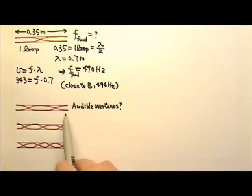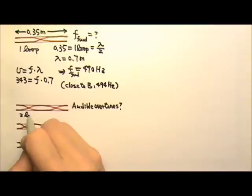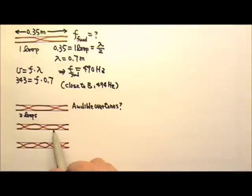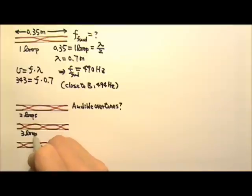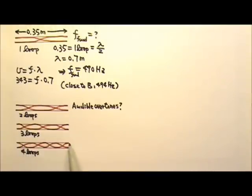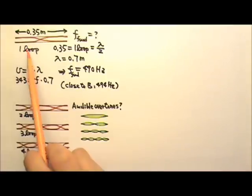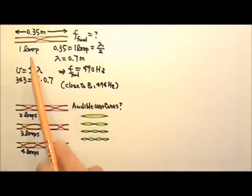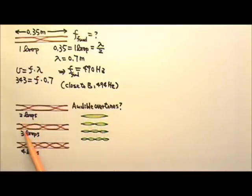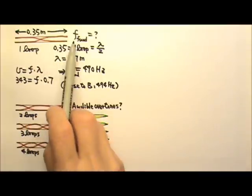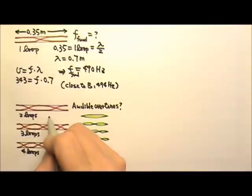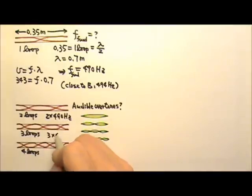For the next audible overtone, we have half plus one plus half — two loops. Then three loops, then four loops. This is very similar to the strings case. The fundamental frequency has one loop and is the first harmonic. Two loops give the second harmonic, with frequency two times the fundamental. Three loops give three times the fundamental frequency, and four loops give four times the fundamental frequency.